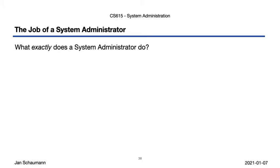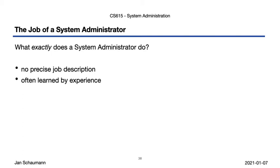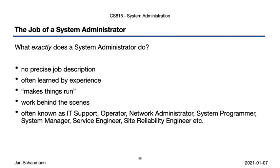So after this whirlwind tour, are we any closer to answering what exactly a system administrator does? We've seen that there can't be a uniform job description, that there's no uniform career path, and that system administrators are often just considered the people who make things run — frequently working behind the scenes, rarely seen unless disaster strikes. The system administrator may fill many roles, sometimes referred to as IT support, operator, network administrator, system programmer, system manager, service engineer, site reliability engineer, or any other variation thereof.